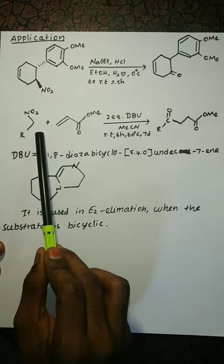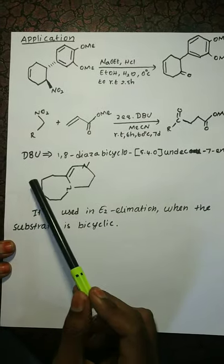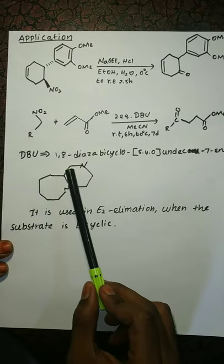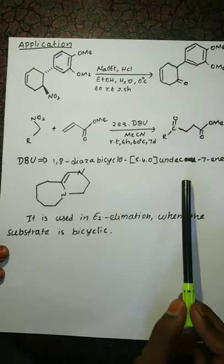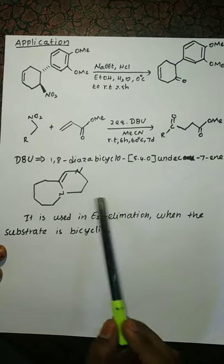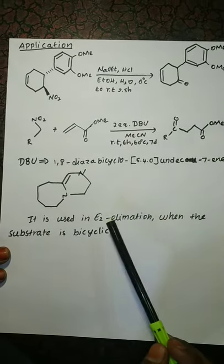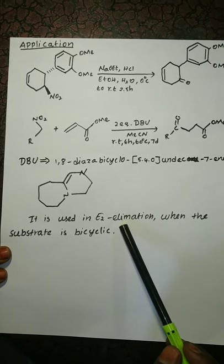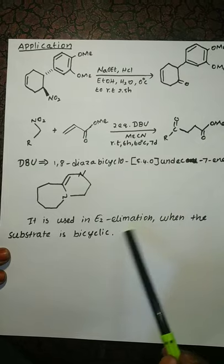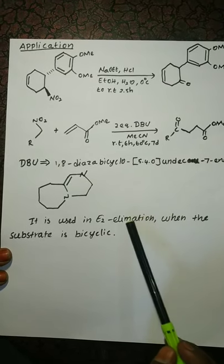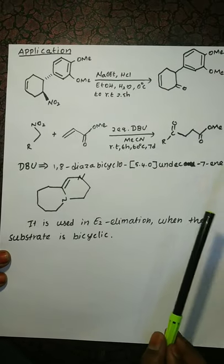We use alpha-unsaturated carbon — what do we use? Michael addition. That's what we use. DBU: 1,8-Diazabicyclo[5.4.0]undec-7-ene — this is the structure and this is how we use it. This is E2 elimination. The E2 elimination is basic, and the E2 elimination means we use DBU for the elimination process.